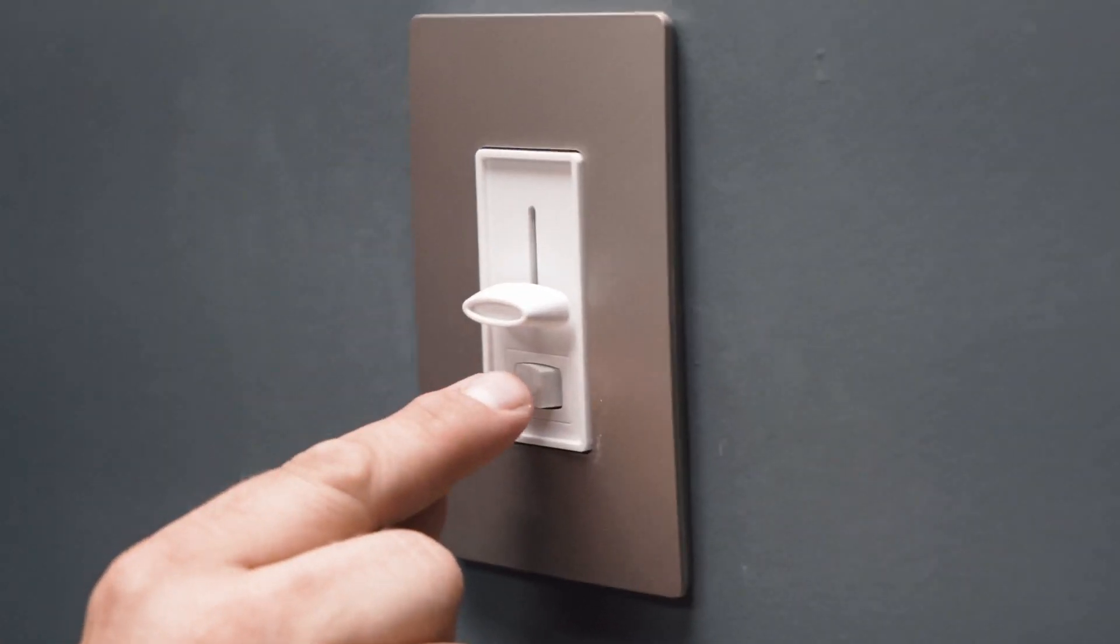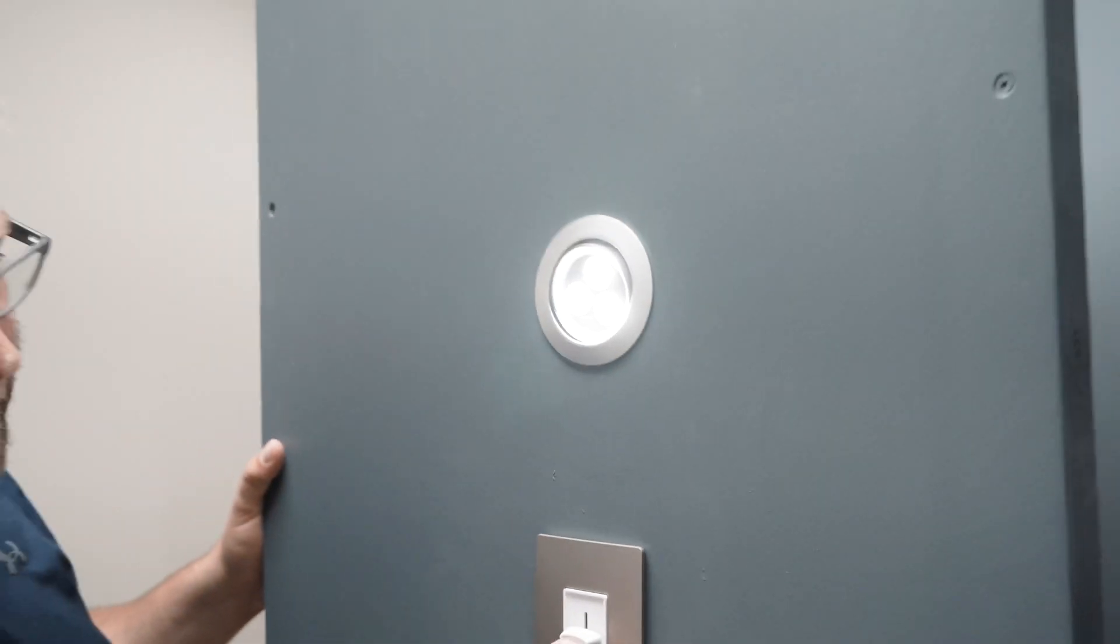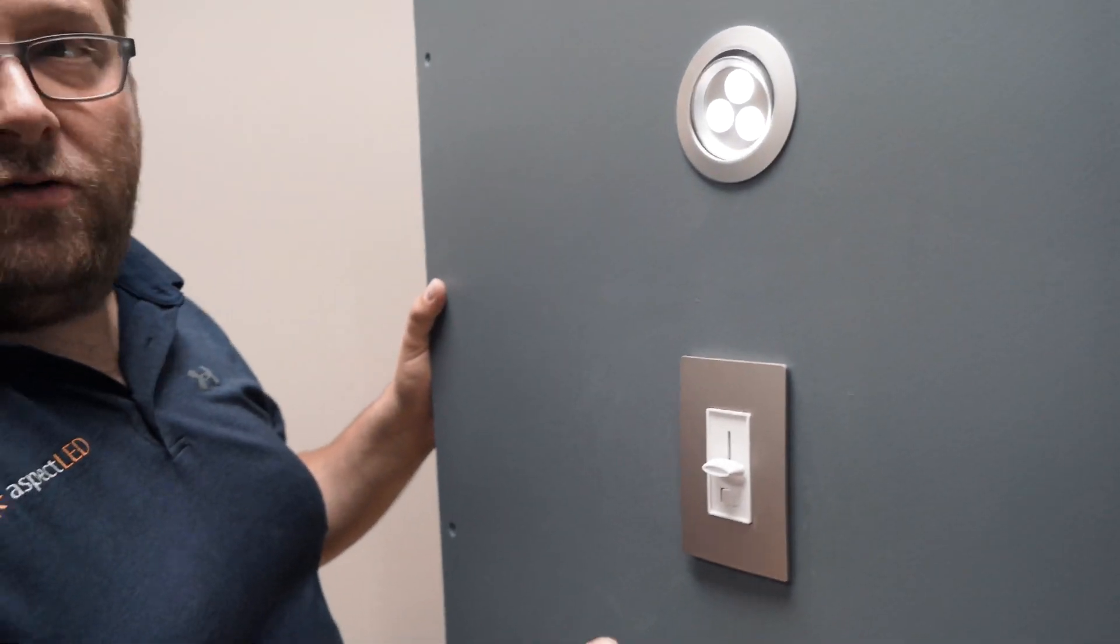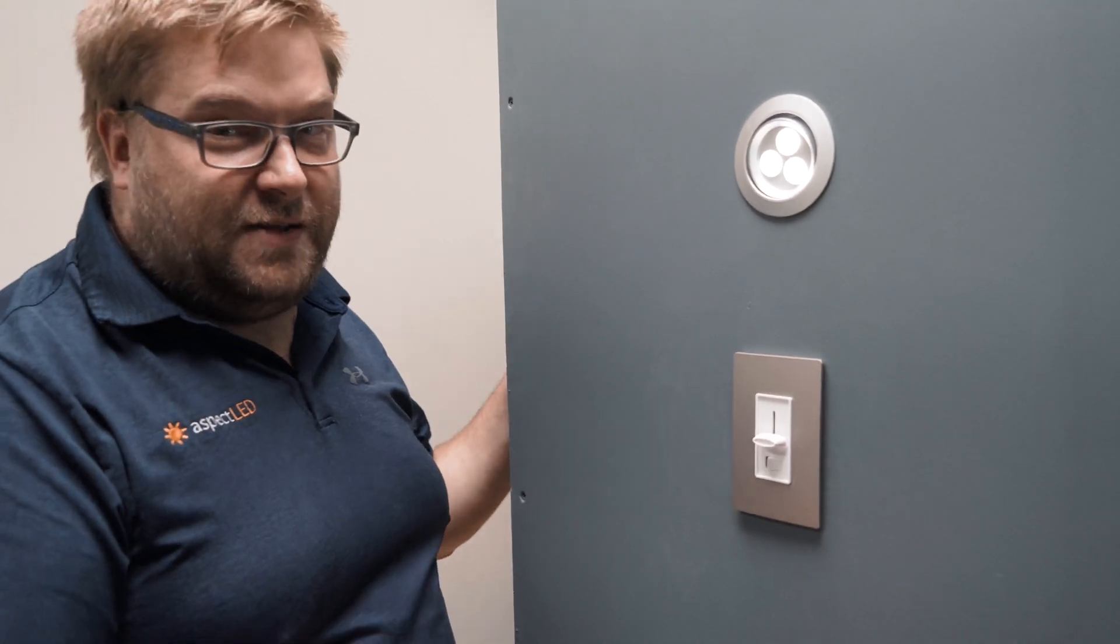If you slide it with the slider in the bottom position and turn it on, you might get some blinking. Just pull that dimmer up and back down to give you satisfactory dimming levels.